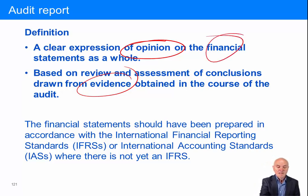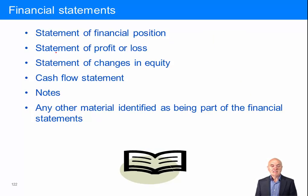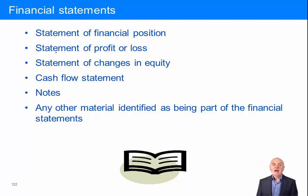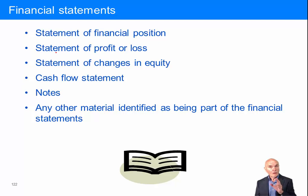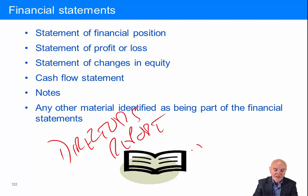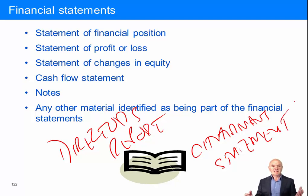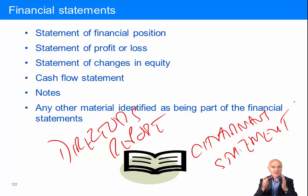The first thing we have to get clear is what's meant by the financial statements as a whole. It's the statement of financial position — sometimes old-fashionedly known as the balance sheet — the statement of profit or loss, the statement of changes in equity, the cash flow statement, and all the notes backing up these other statements. Very rarely there may be some other material identified as part of the financial statements. But the audit confines itself to basically these five statements.